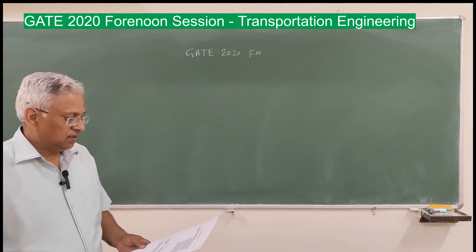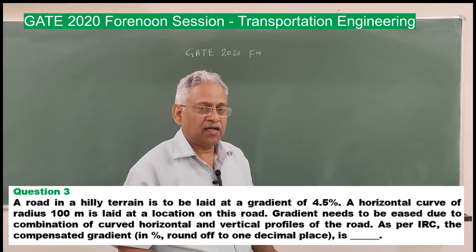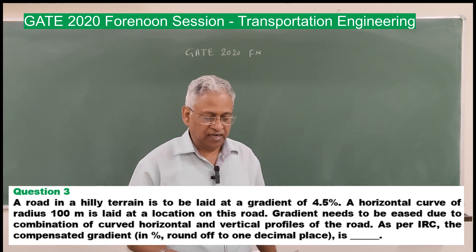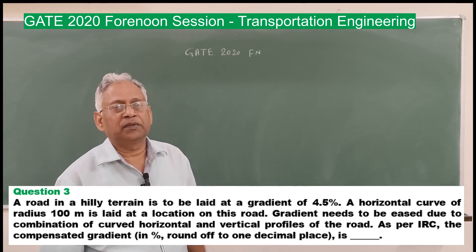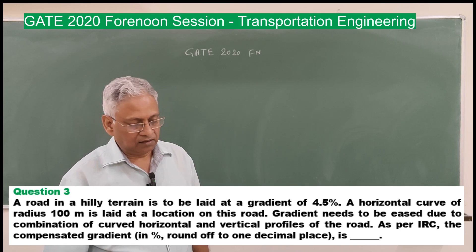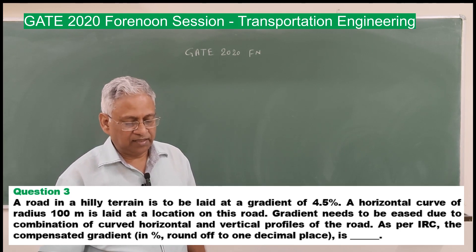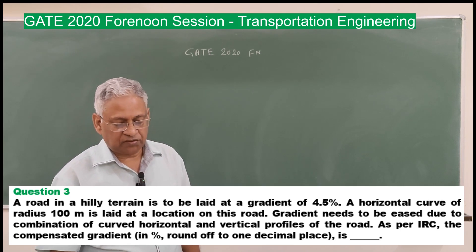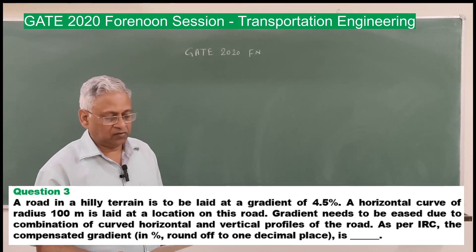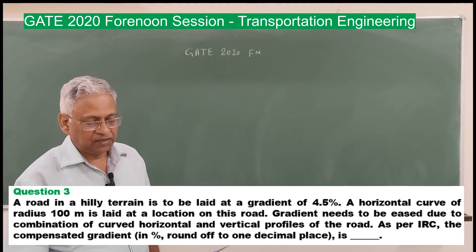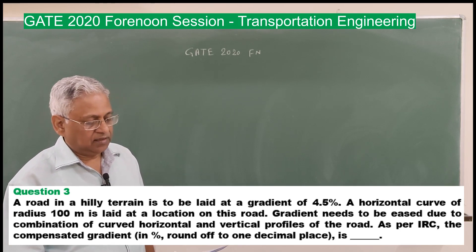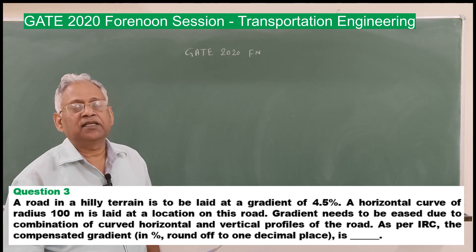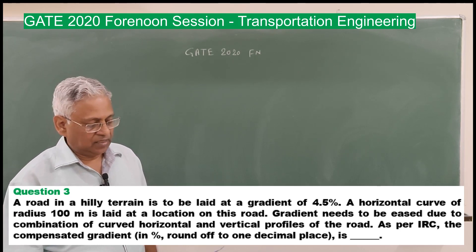Question number 3: A road in a hilly terrain is to be laid at a gradient of 4.5%. A horizontal curve of radius 100 meter is laid at a location on this road. Gradient needs to be eased due to combination of curved horizontal and vertical profile of the road. As per IRC, the compensated gradient in percent rounded off to one decimal place is.